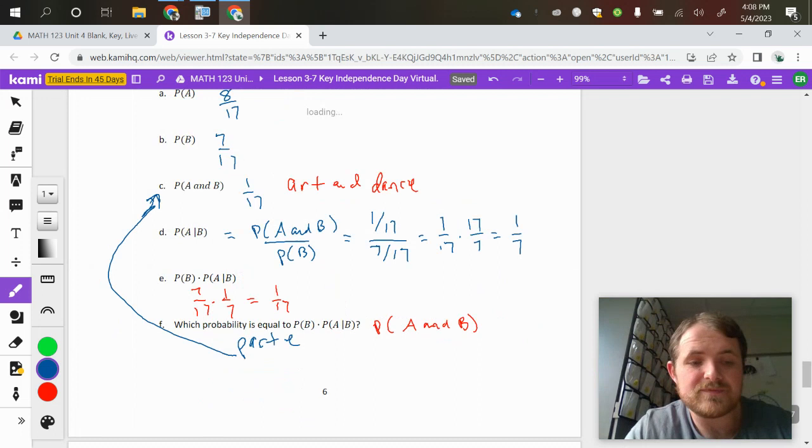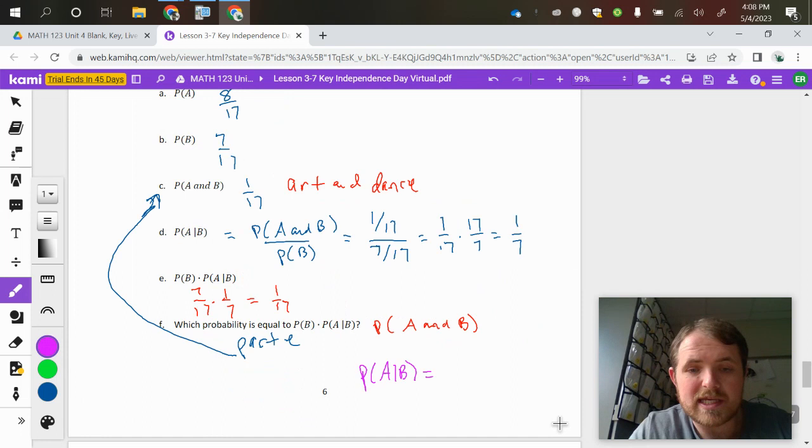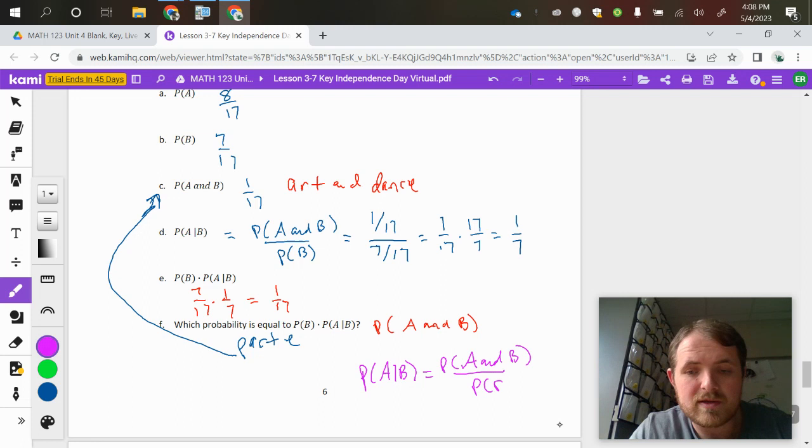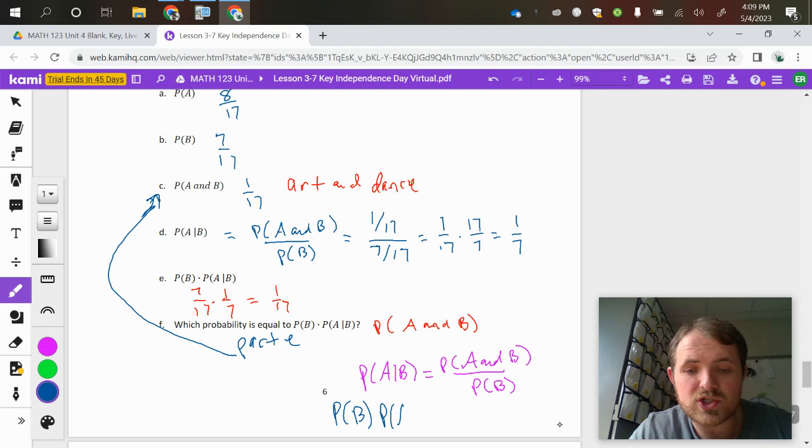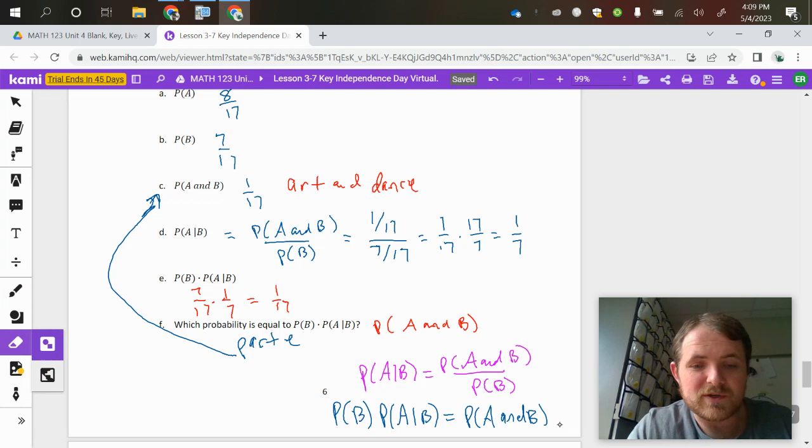If you take the formula in part D, you've got the probability of A given B equaling the probability of A and B all over the probability of B. If you manipulate the formula so that it looks like this, you just would have to multiply by the probability of B on both sides, which shows you that the probability of the intersection of A and B is equal to this original part right here, that the two things circled in green are the exact same thing.